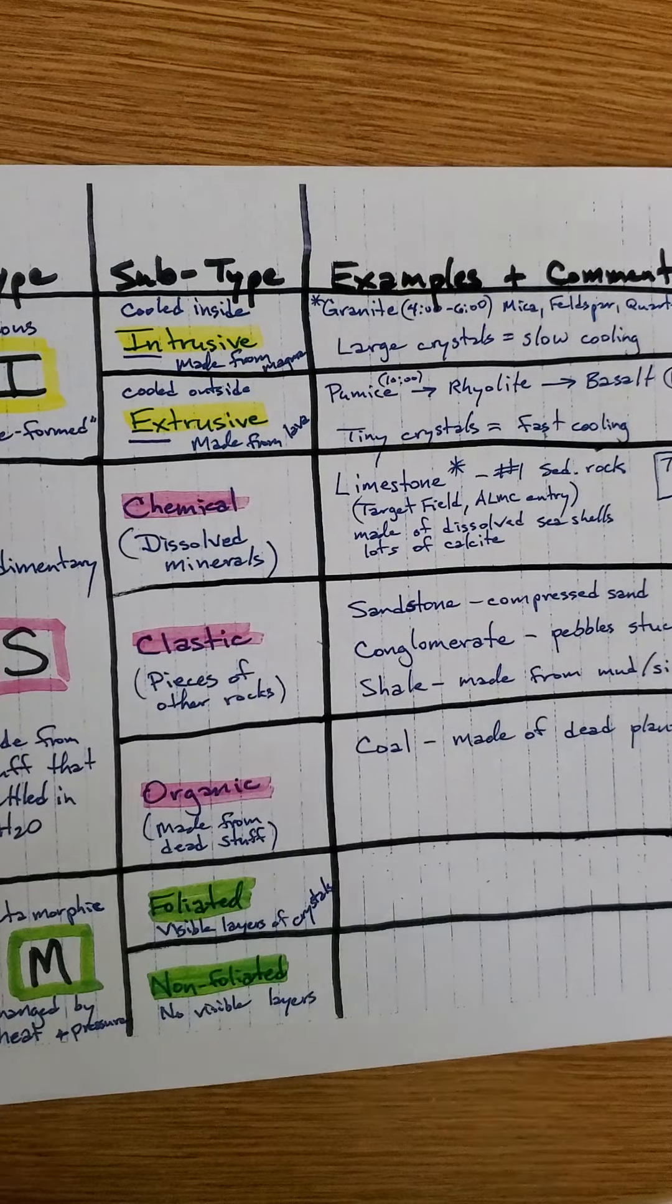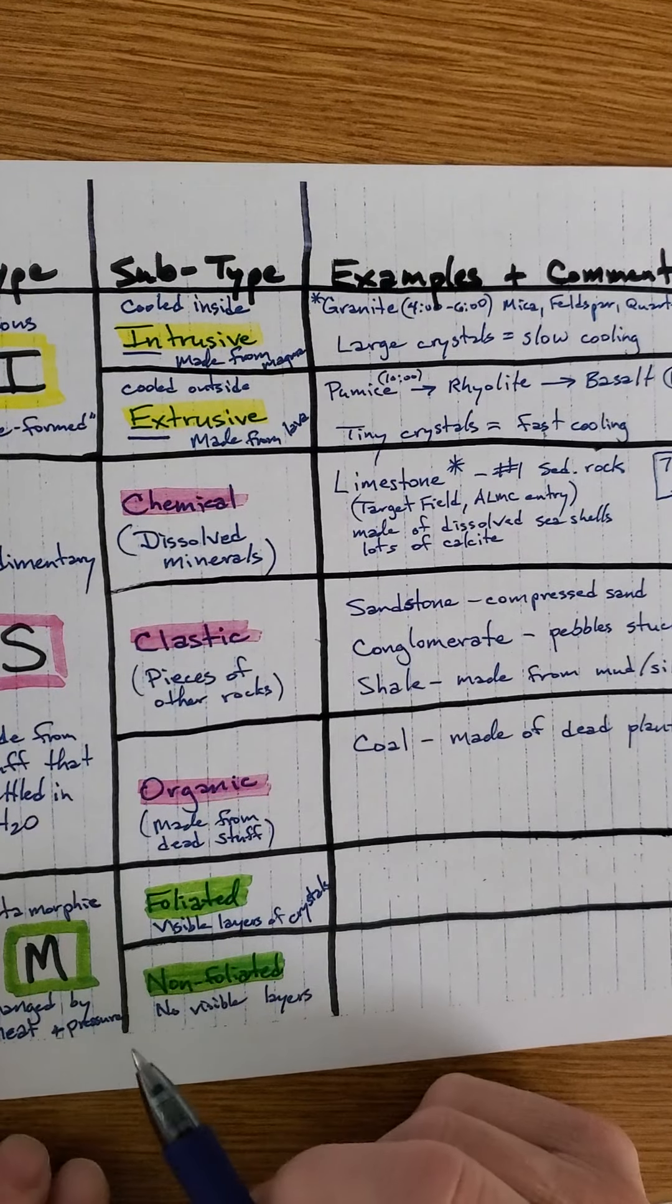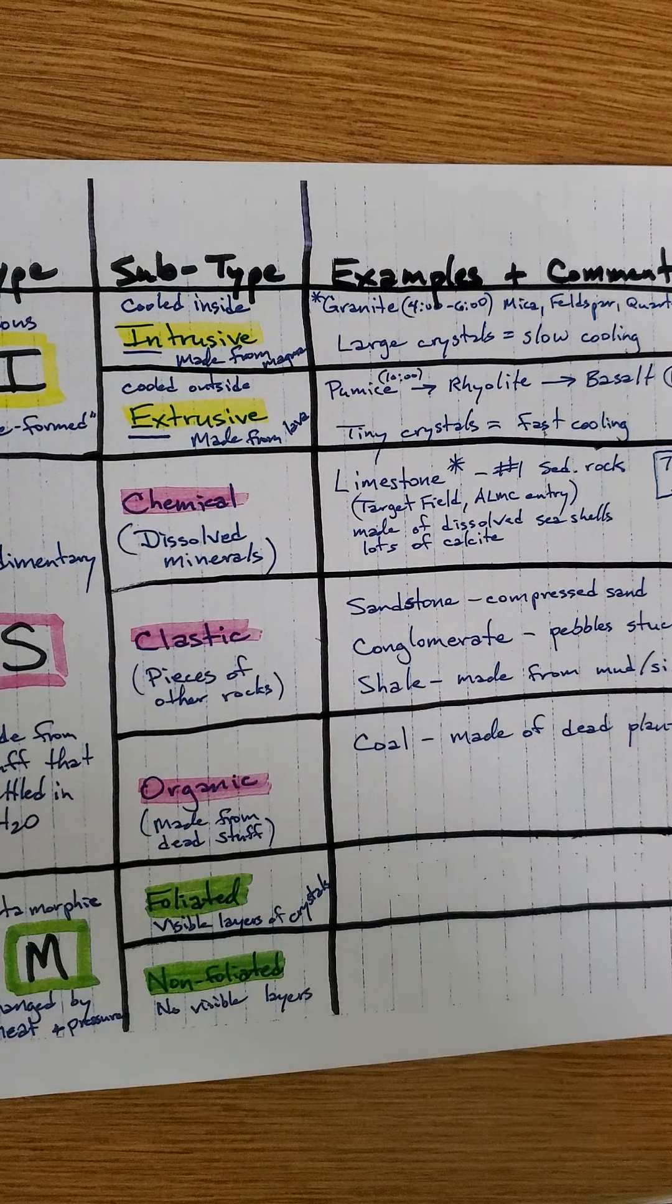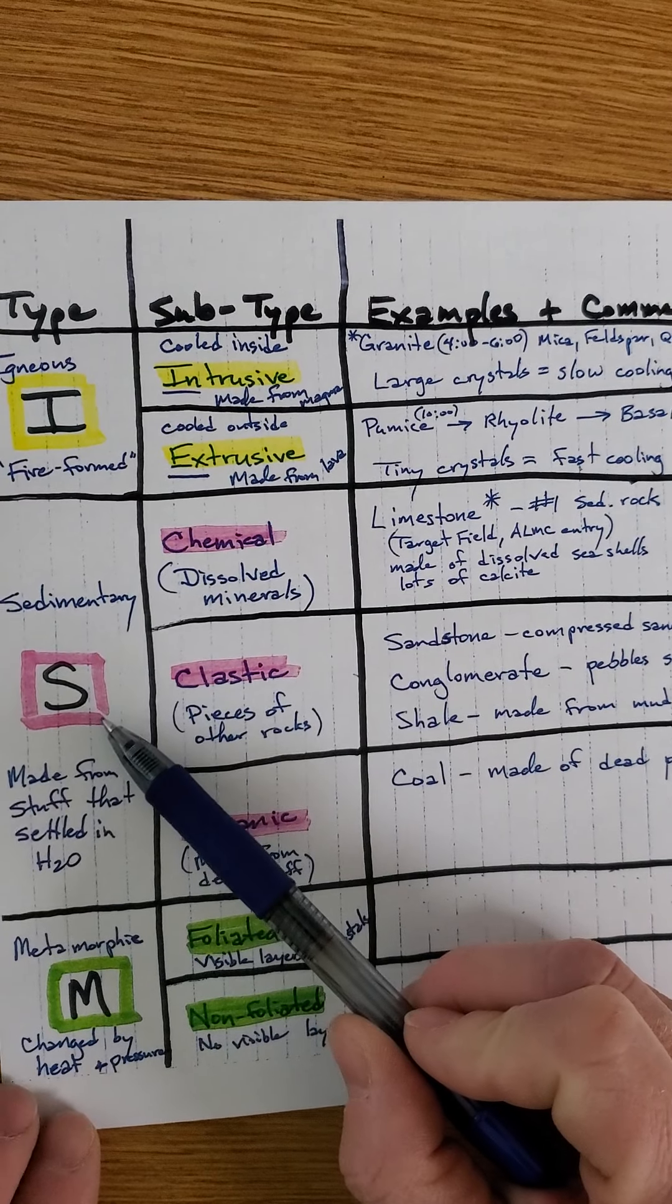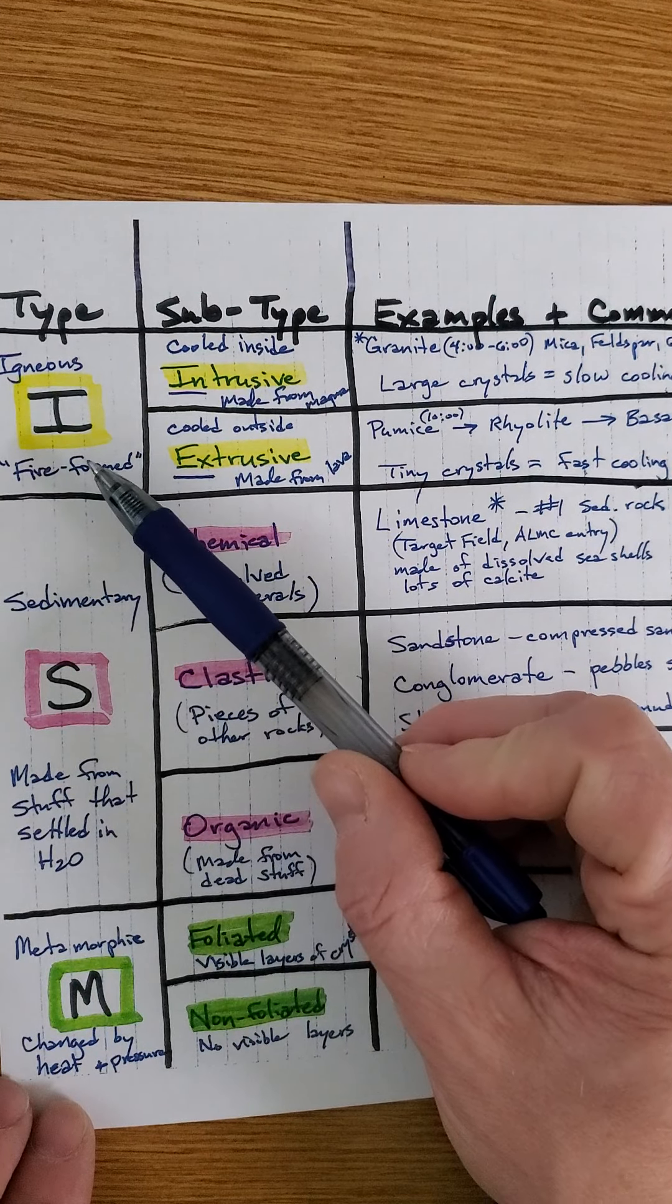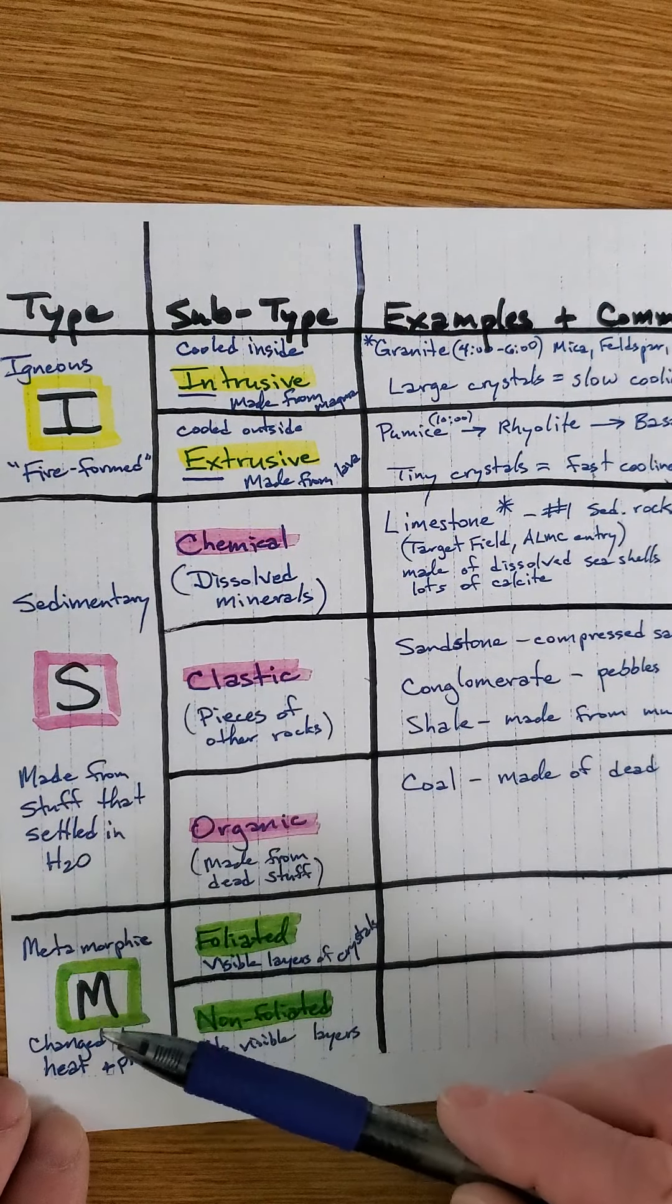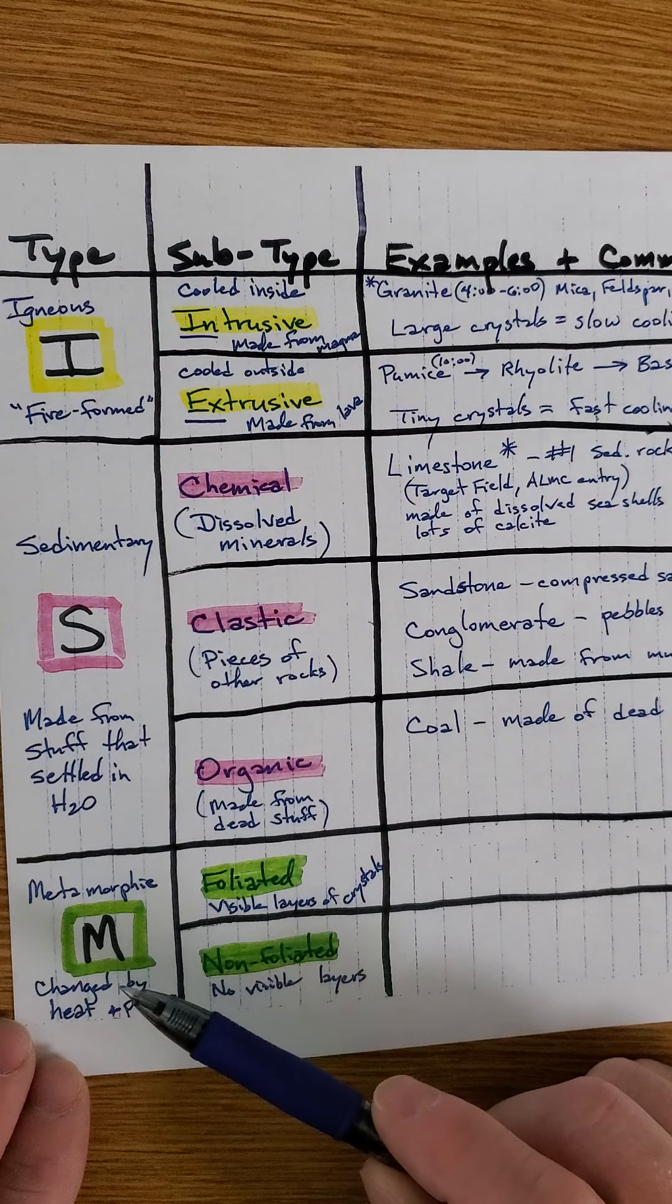We're going to do metamorphic rock today. I only have a few examples for you. It's an important subject, but metamorphic is the least common of the rocks. Most rocks on the planet are igneous. Most of the rocks on the surface of Earth are sedimentary. Did you catch the difference there? Most of the rock on Earth is igneous, but most of it is down deep inside. Most of the rock on the surface is sedimentary, and the other stuff is the metamorphics. Now, the metamorphic rock is rock changed by heat and pressure.